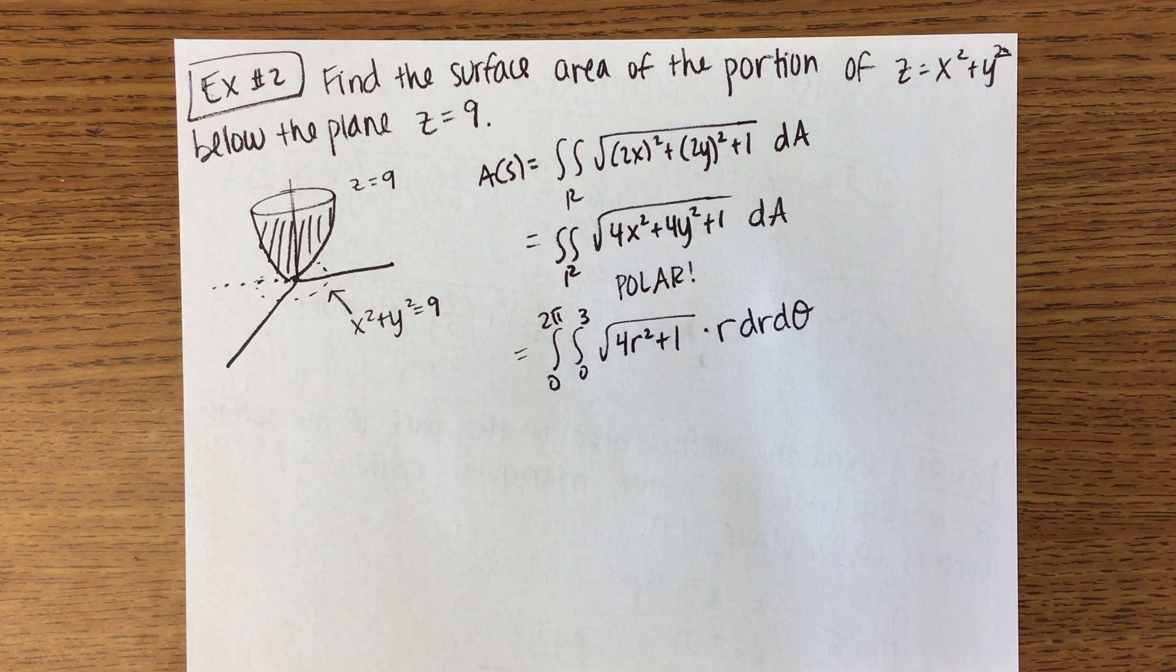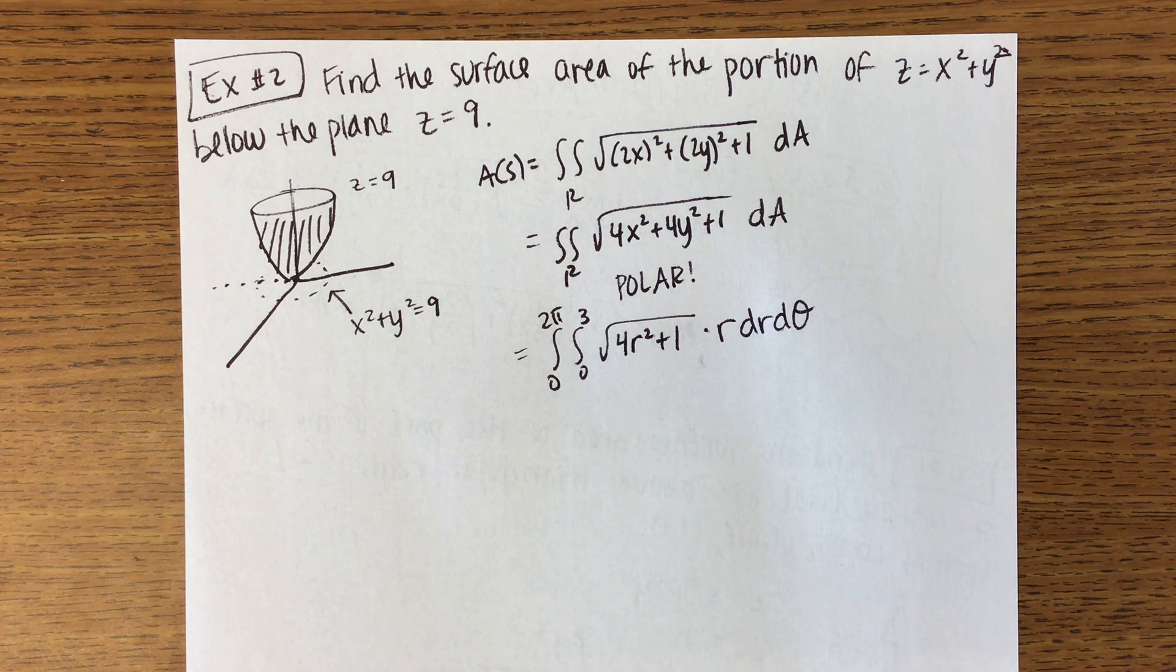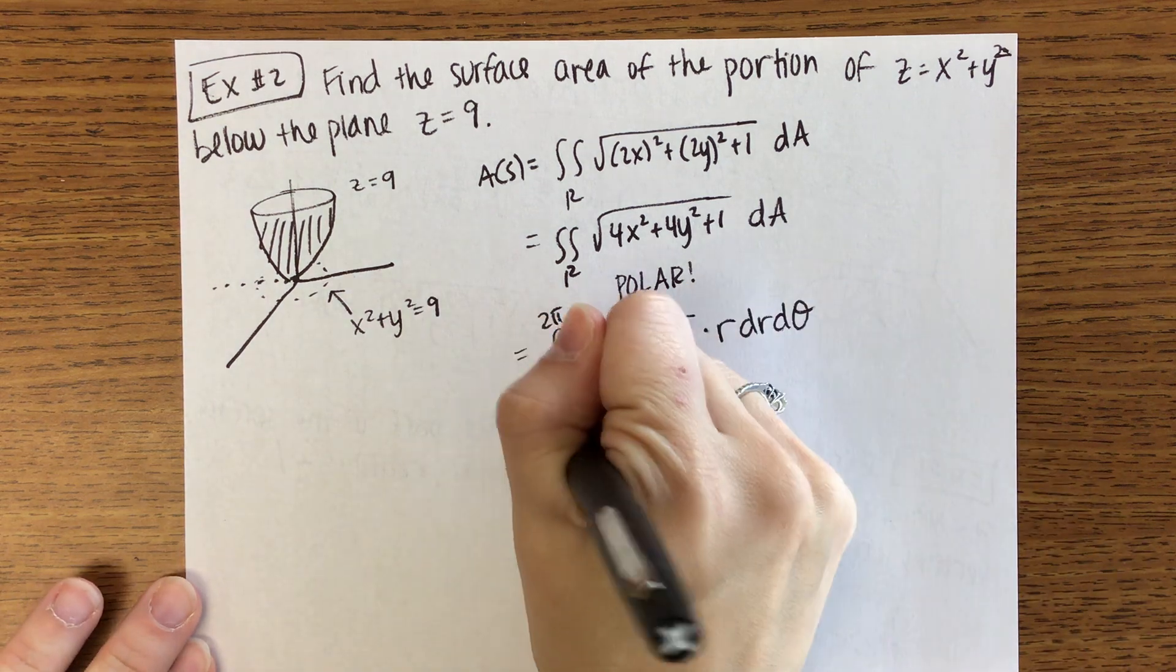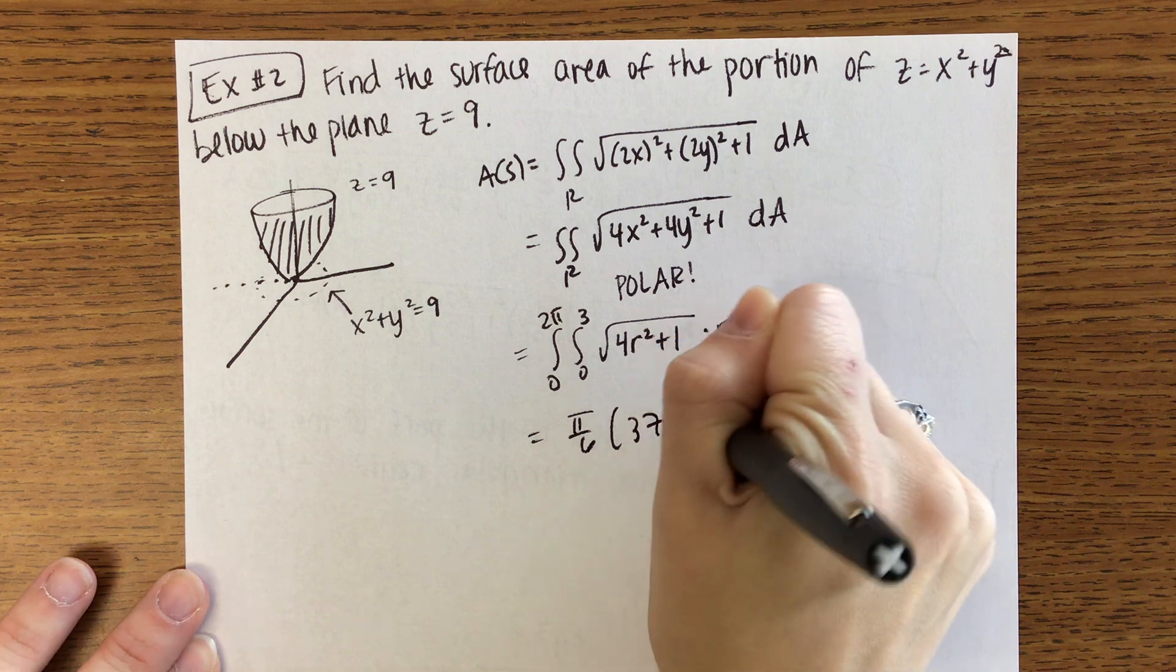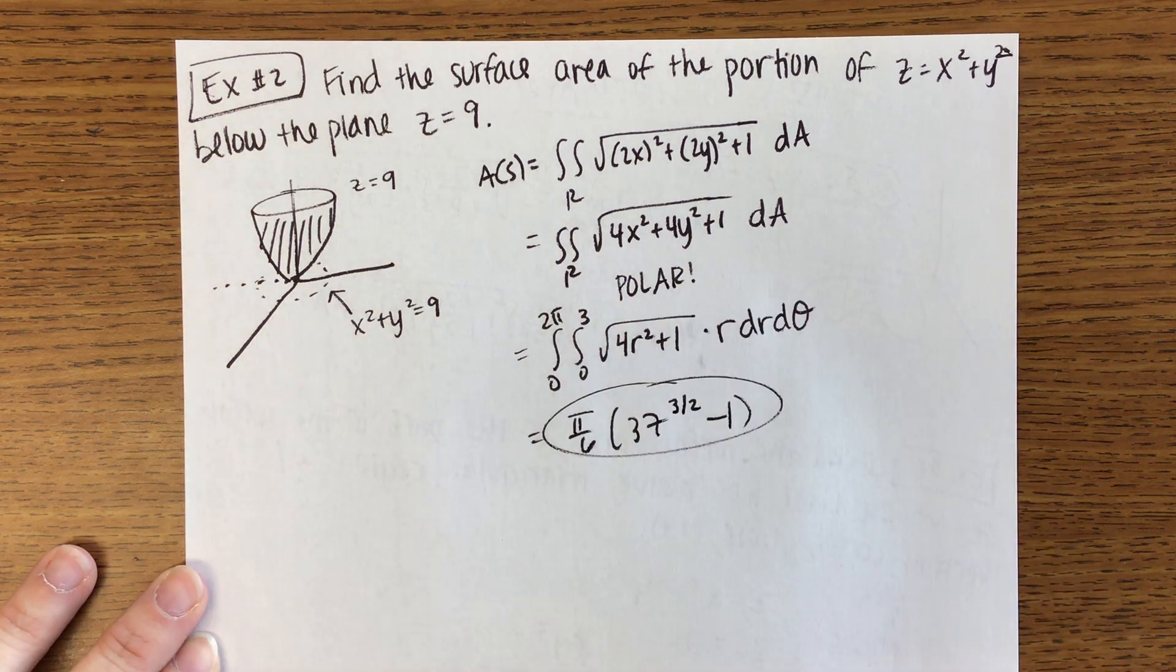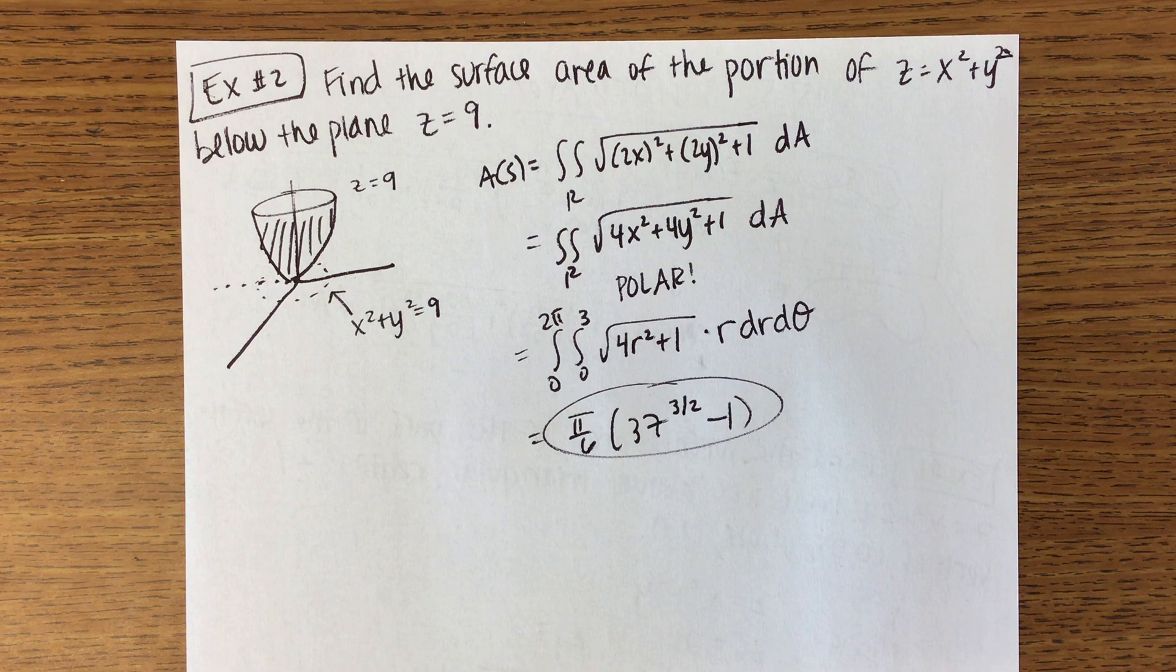Okay. Do we feel strongly about integrating the rest of this? We do? You want to go about integrating it? Okay. So can I just give us the answer? Okay, great. Ends up being pi over 6 times 37 to the power of 3/2 minus 1.